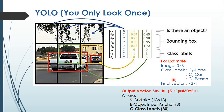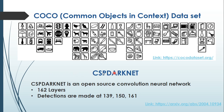Now we will focus on what the 80 class labels are. For class label 80, we are using the COCO dataset, where COCO stands for Common Objects in Context. This dataset consists of 80 objects as shown in the figure. You can find the detailed explanation using the link cocodataset.org.